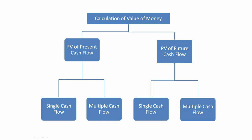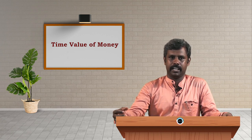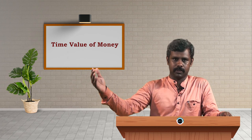To calculate the value of money at different points of time, we have two basic models. One is the future value of the present cash flow, and another is the present value of the future cash flow. When it comes to future value and present value, we have two different cash flows — single cash flow and multiple cash flow. The former is the compounding one, where we compound from today to the future, and the second is the discounting one, where we discount from the future to the present.